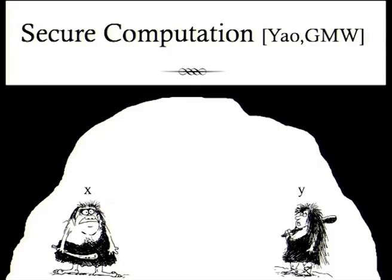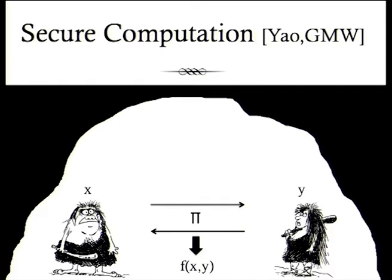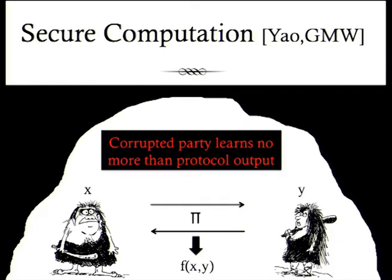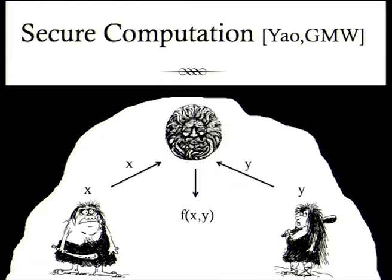The basic idea is as follows. We have two parties holding private inputs X and Y, and they want to jointly compute some function over the inputs. They can run a protocol pi and jointly compute this function. The security guarantee is that even if one of these parties is corrupted, it does not learn anything more than the function output. Essentially, the parties could have simply sent their inputs to a trusted oracle who computes the function output and then sends it back to the parties.